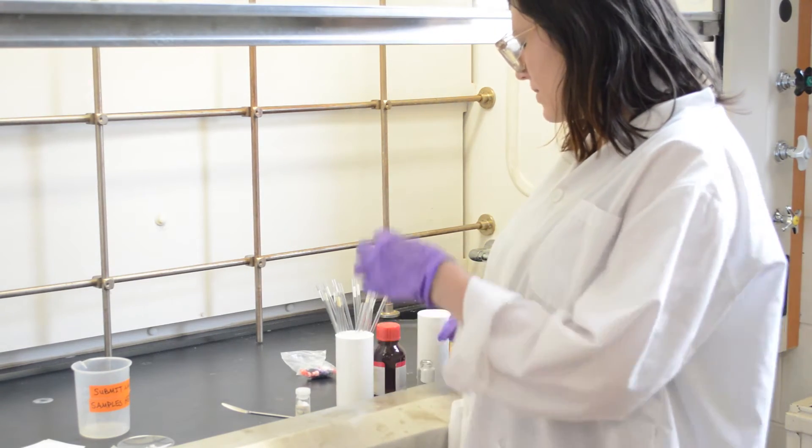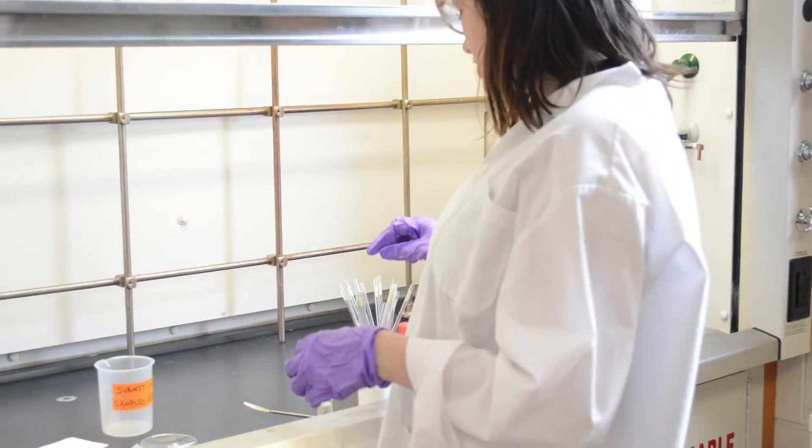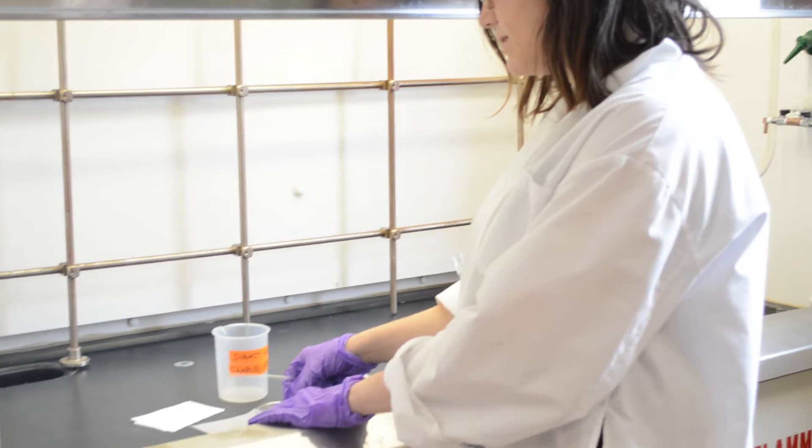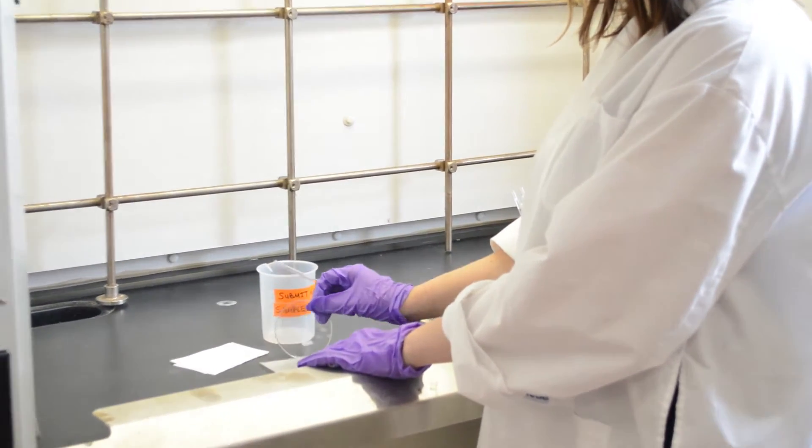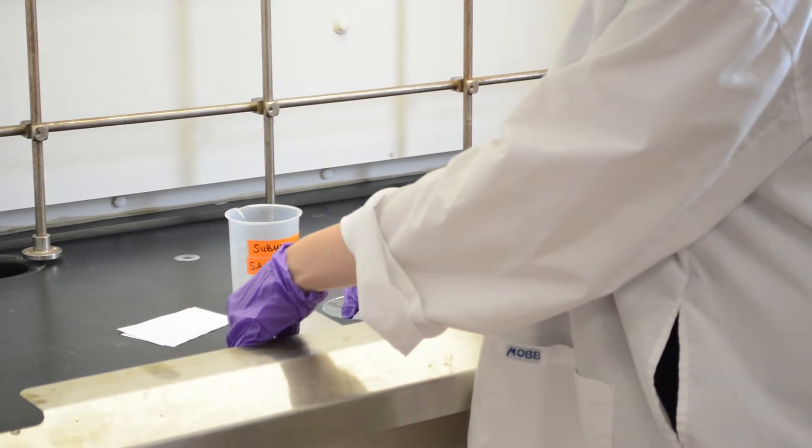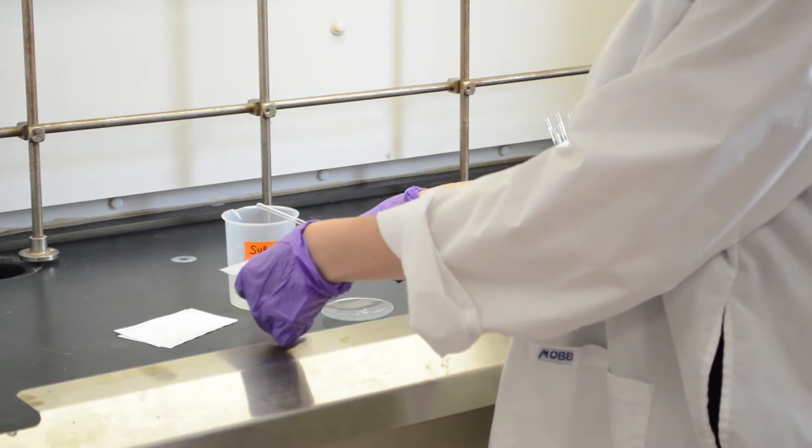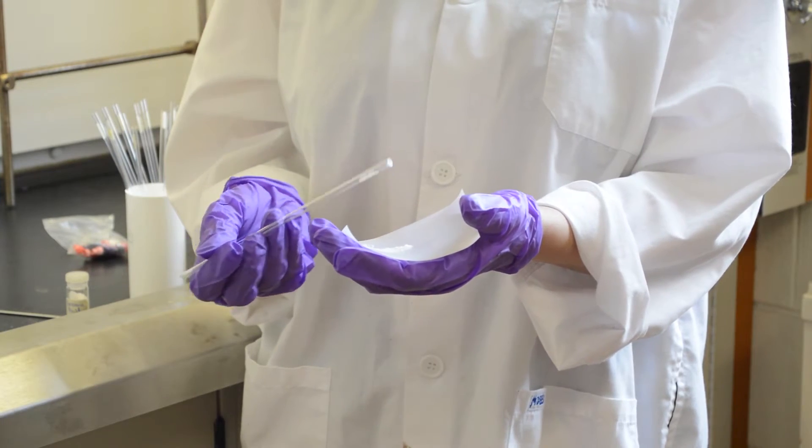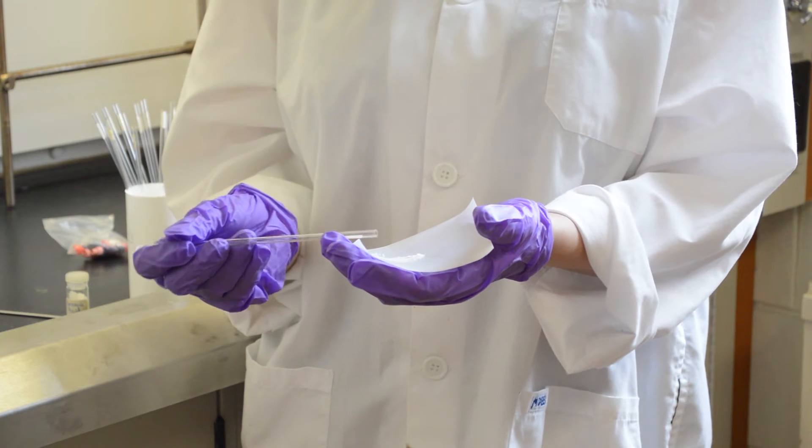The other method that we use is to just take this glass NMR tube, put a bit of sample on a weighing paper, and then take some of the solid and scoop it into the NMR tube.